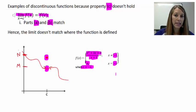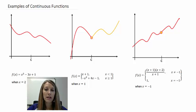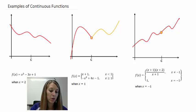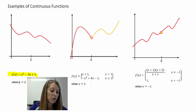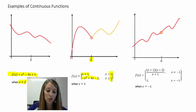Now that we've seen all the bad examples, let's look at the good ones. These are the same examples from the first video, but now we can see why each function is continuous — all three properties hold. The first example is a polynomial that causes no problems anywhere, so it's continuous everywhere, for instance at x equals 2. The second example is a piecewise function where the two pieces match up at 1, so the function is continuous there with c equal to 1.